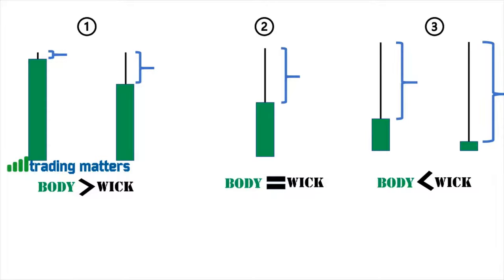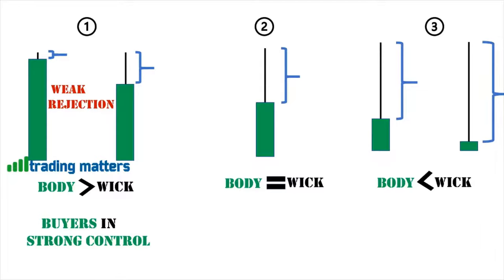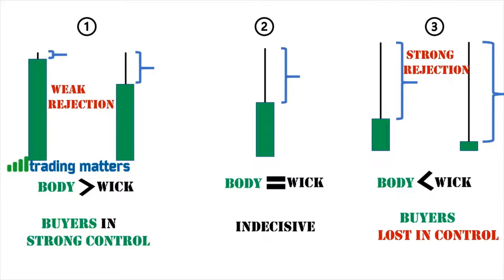In the first case, smaller wick size indicates weak rejection of higher prices, which means buyers are in strong control. In the second case where body equals wick, there is equal buying and selling pressure, so it is indecisive in nature. In the third case, where the wick size is very large compared to the body, it indicates strong rejection of higher prices, meaning buyers have lost control.